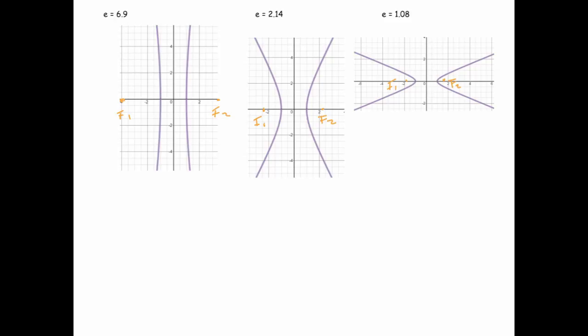So again, this makes sense because e is c over a, and the distance from the origin to either focus is c. The distance from the origin to either vertex is a, so this is what we would expect. So the more eccentric hyperbola gets, the more it looks like two parallel lines. In other words, that rounding behavior becomes less pronounced.